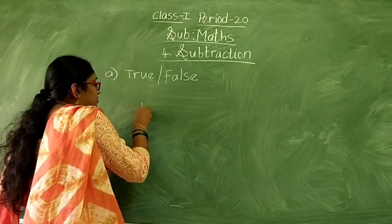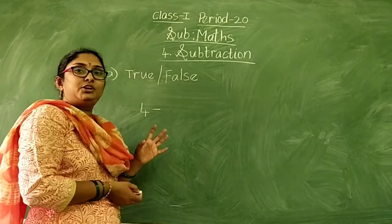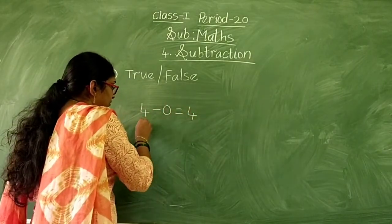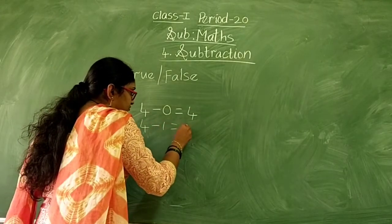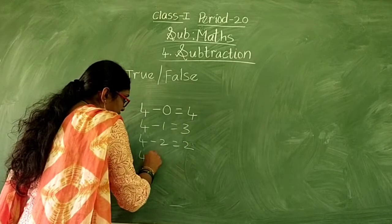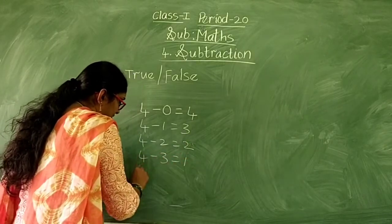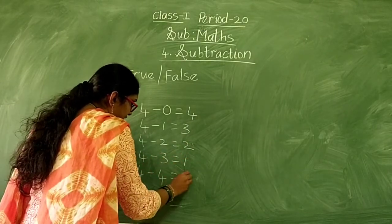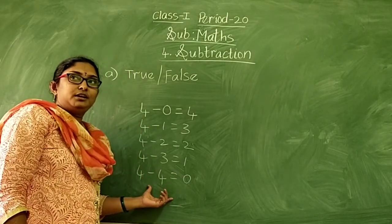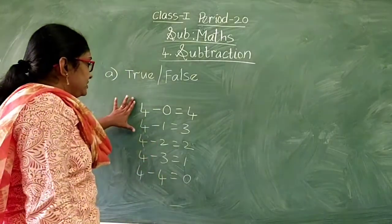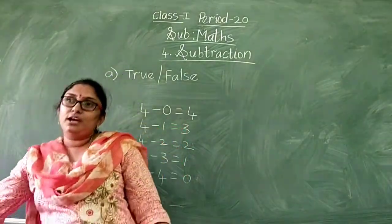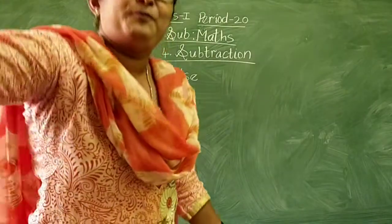For example, using 4, first we can do: 4 minus 0 is 4. 4 minus 1 is 3. 4 minus 2 is 2. 4 minus 3 is 1. 4 minus 4 is 0. This is called the subtraction family of 4.